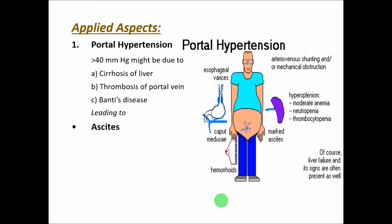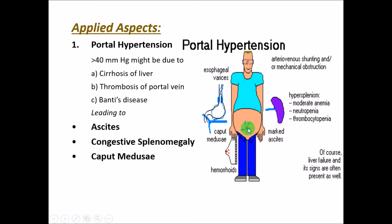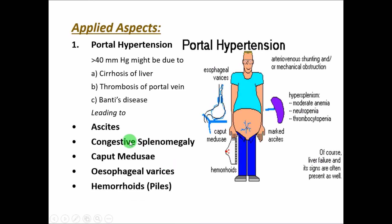Portal hypertension leads to conditions such as ascites — the abdomen filled with fluid — congestive splenomegaly, a spoke-wheel appearance around the umbilicus called caput medusae, esophageal varices, and hemorrhoids or piles. All of these occur at the sites of porto-caval anastomosis.